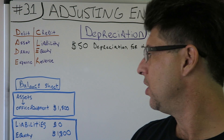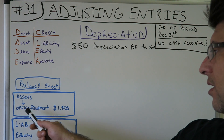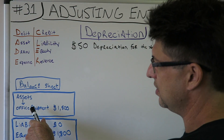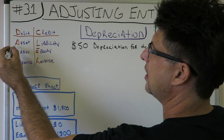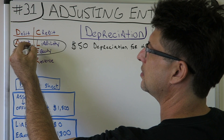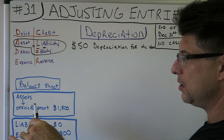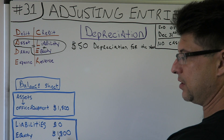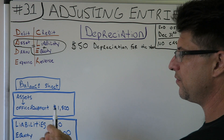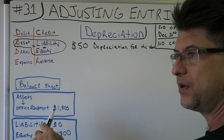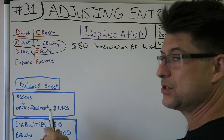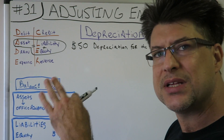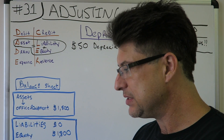Let's set it up using the book example. During the year you bought an asset — office equipment for $1,800. That's the only thing on the books. Your balance sheet is assets equal liabilities plus equity. You have office equipment for $1,800, no liabilities, and equity of $1,800. You already used cash when you bought it: debit office equipment, credit cash.